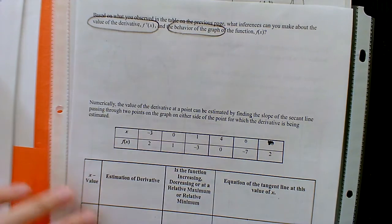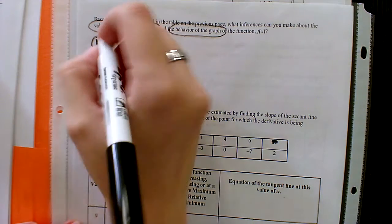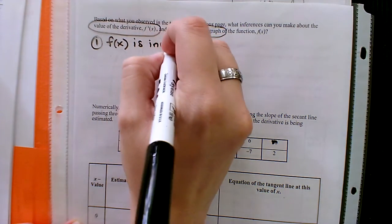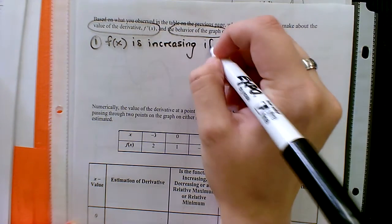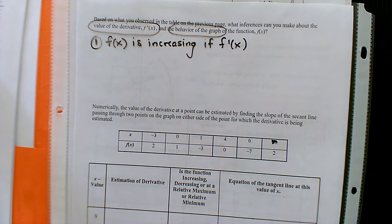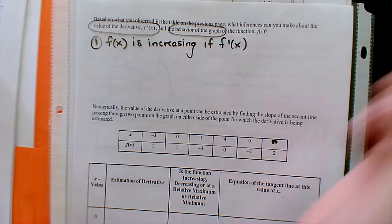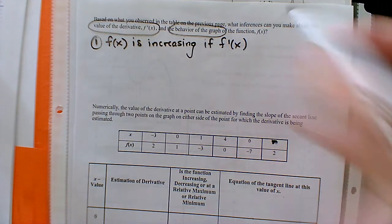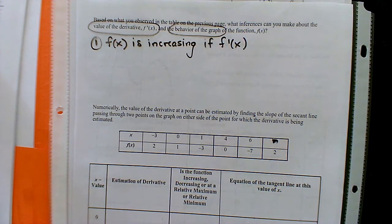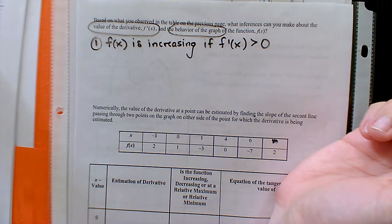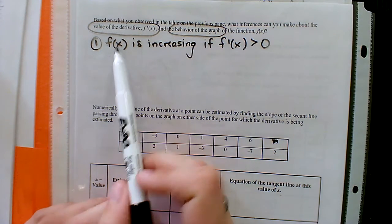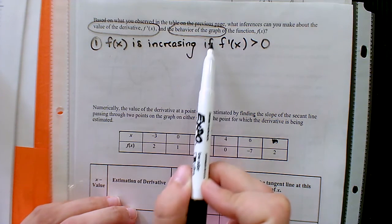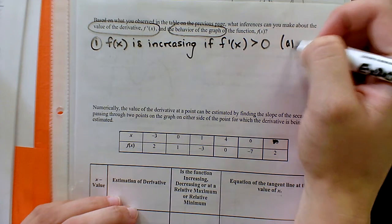Let's write these relationships down. The first one: f of x is increasing if the derivative — f prime — is positive. Using math notation, all positive numbers are bigger than zero on a number line, so f of x is increasing if the derivative is greater than zero, a.k.a. a positive value.